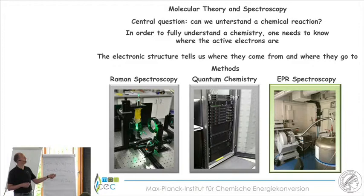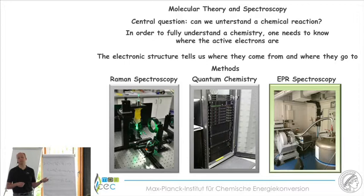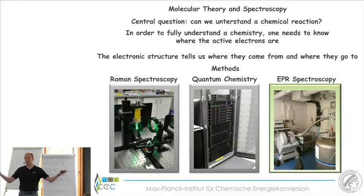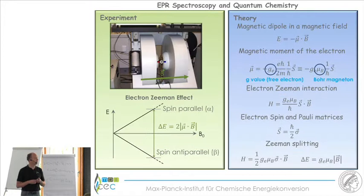Why is EPR so useful? If one asks whether we can understand a chemical reaction, the answer is that to fully understand it, one needs to know where the active electrons are — the electronic structure tells us where they come from and where they go. The three methods I work with most are Mössbauer spectroscopy, quantum chemistry, and EPR spectroscopy.